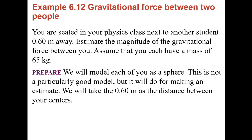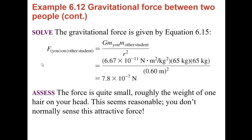You're seated next to another student 0.6 meters away. You can estimate the gravitational force between you, assuming each student has a mass of 65 kilograms. We treat the students as spheres; the distance between centers is 0.6 meters. Using F = G × m₁ × m₂ / r², where G is the universal gravitational constant, we get a really, really small force. You're not flying toward each other because the gravitational force between two students is much, much smaller than the force between you and the Earth.